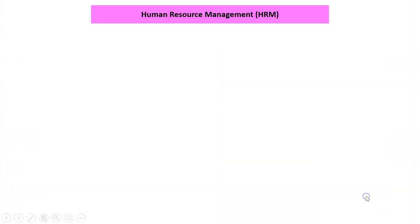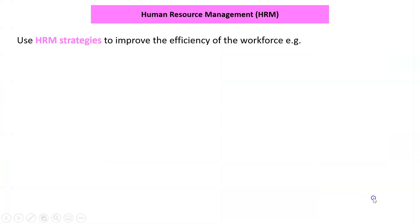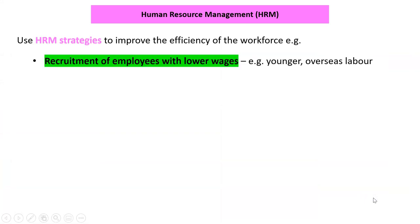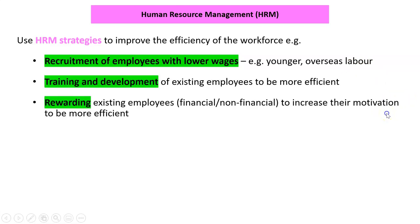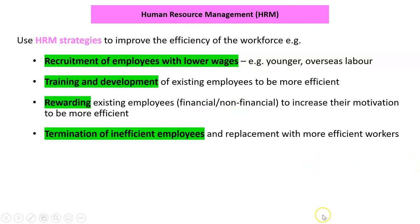What else can we do to become lower cost? We can use HR strategies. We can recruit employees with lower wages — either younger employees or overseas labor — because lower wages mean lower costs. We can train and develop employees to be more efficient, which brings prices down. We can reward existing employees using financial and non-financial rewards to increase their motivation and efficiency. And we can terminate inefficient employees and replace them with more efficient workers.